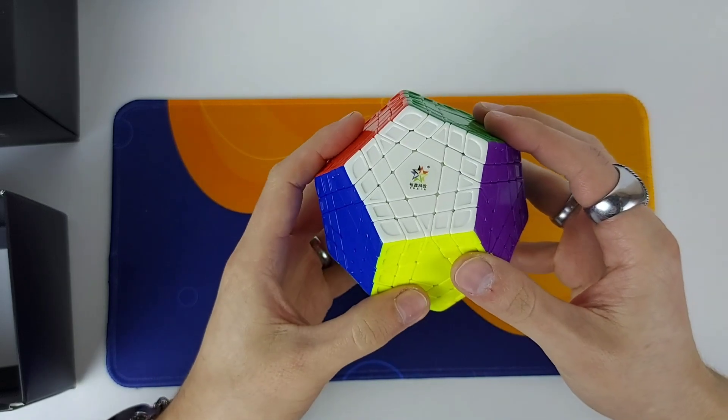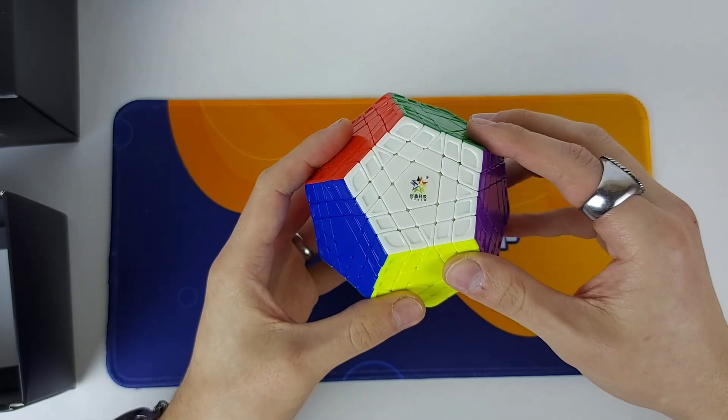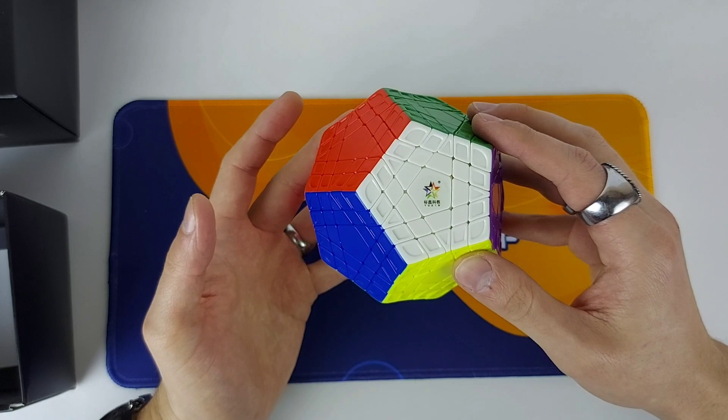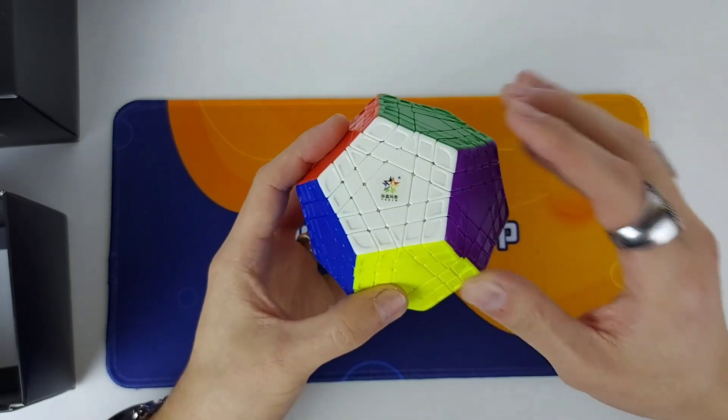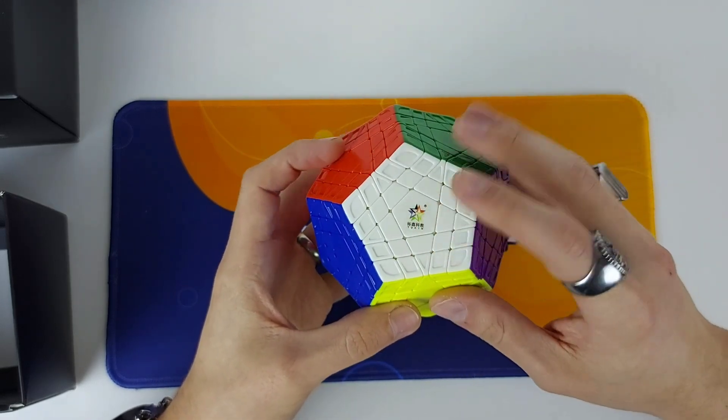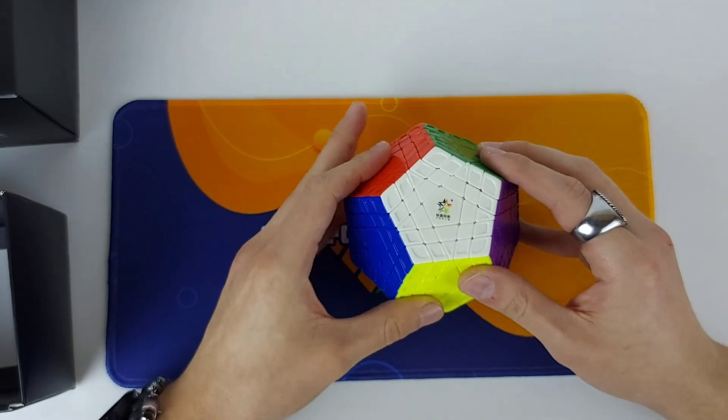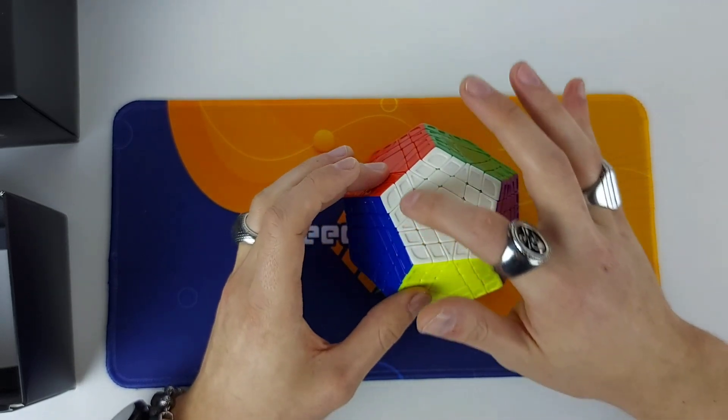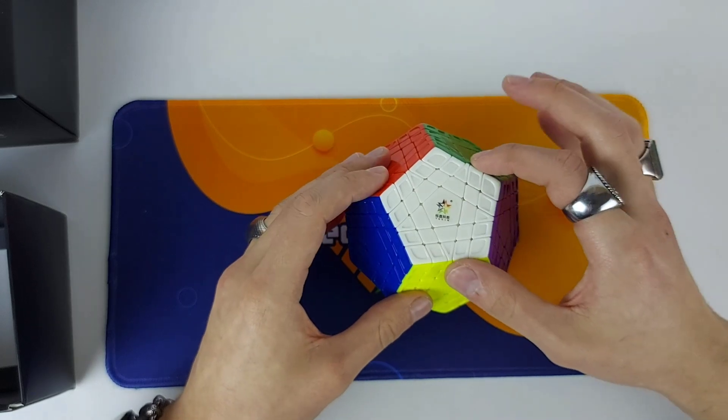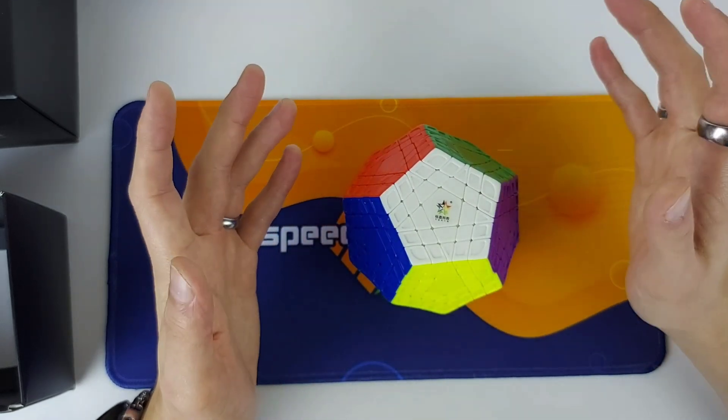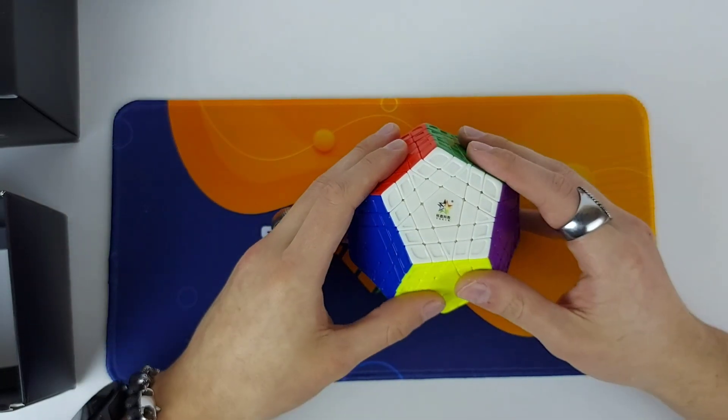I know how to solve a Megaminx but I'm going to have to rely on bigger cube methods I guess to solve this one. I don't know much about it but I'm guessing it's just making the centers like a big cube and then pairing the edges, but yeah we'll see how it goes.